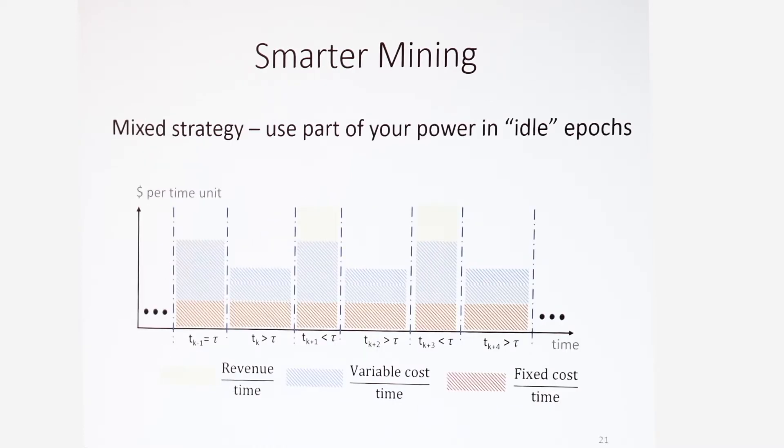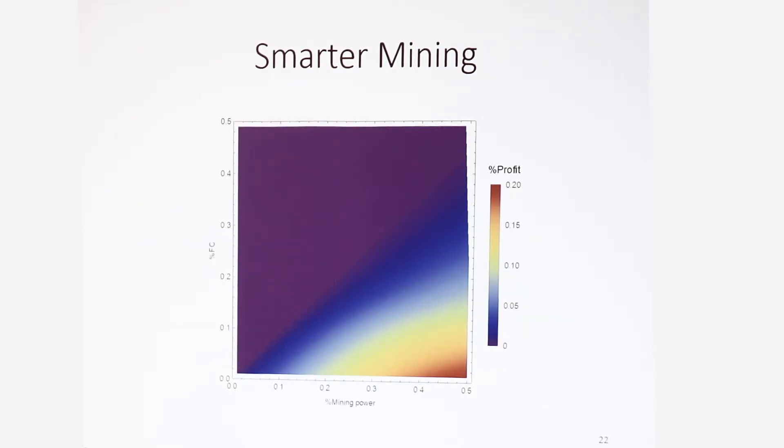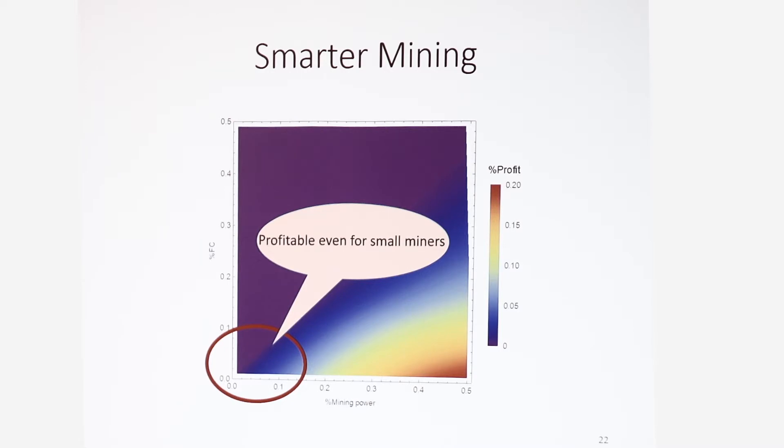Now, can we do better? In the paper, we show something quite better. We show smarter mining. It's a very simple extension of smart mining into mixed strategies. Instead of just mine with full power or stay idle, this time we allow the attacker to mine with only part of its machinery. The details are in the paper. I'm not going to go into it. I'll just mention that smarter mining is extremely profitable in several cases. It can lead to 20% return of investment, which is very high. Also, in many cases, it's profitable even for very small miners.